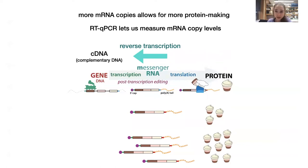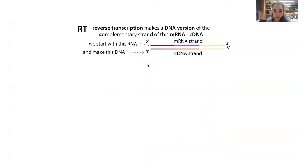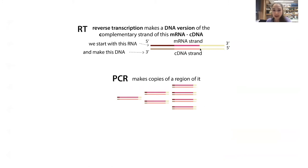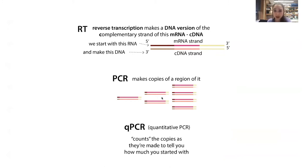We use PCR — polymerase chain reaction — which makes DNA copies from a DNA template. Since we have RNA, we need to reverse transcribe it first. Transcription goes from DNA to RNA; reverse transcription goes from RNA to DNA using a reverse transcriptase enzyme, producing complementary DNA, or cDNA. Then in the PCR step, we take that cDNA and make copies of a region of it. Each PCR cycle gives a doubling, so you quickly build up lots of copies. With qPCR, you count the copies as they're being made.